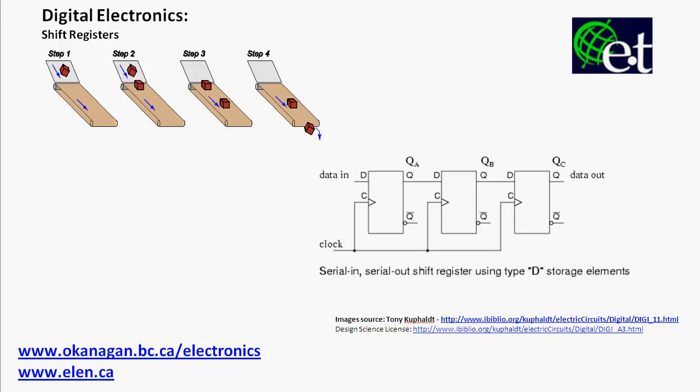Shift registers are a commonly encountered digital circuit, and the purpose of shift registers is to shift data along, usually in a serial manner, so bit by bit. Oftentimes they add some kind of clock delay between the input and the output of the shift register. But they can also be used as parallel-to-serial and serial-to-parallel converters.